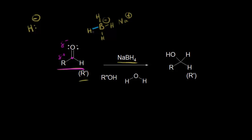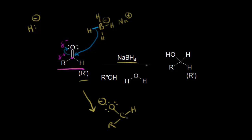These two electrons are going to attack this carbon, pushing these electrons off onto the oxygen. So we're going to now have our carbon bonded to a hydrogen, and then over here on the left we would have our oxygen, now with three lone pairs of electrons, so a negative one formal charge, and an R and an H. The electrons in blue right up here are going to form this bond, so we've transferred a hydride — a hydrogen and these two electrons — to our carbonyl.